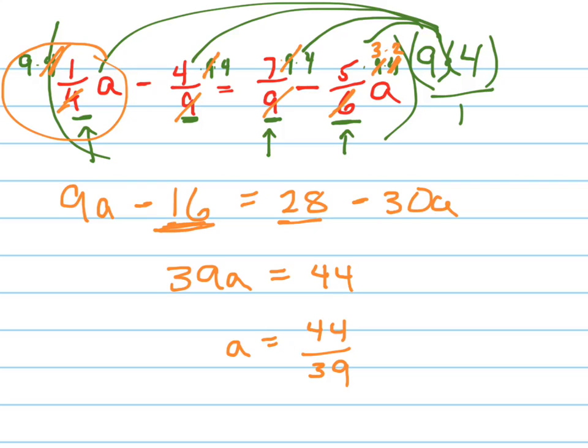39a equals 44, which means a equals 44 over 39. And now let's just see if we can reduce this a little. 44 is 4 times 11, or 2 times 2 times 11. 39 is 3 times 13. There's nothing that I can cancel out of any of those. So your answer is just going to be 44 over 39.